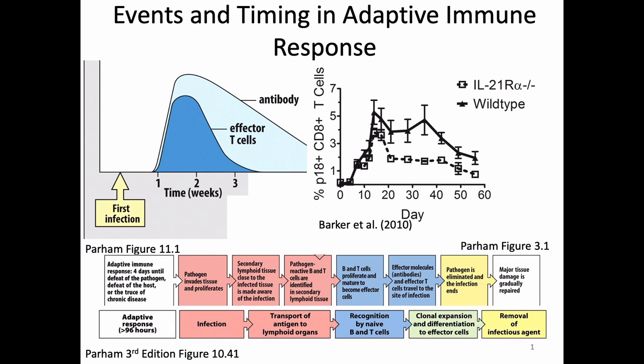Today we're going to continue talking about aspects of immune responses in the periphery. This material is situated in the midst of everything we've said about T cells, though technically a lot of it also applies to other things in the periphery like B cells. The basic question we're getting at all this week is what takes so long and what events are involved in turning on an adaptive immune response and having it start to act against microbes.